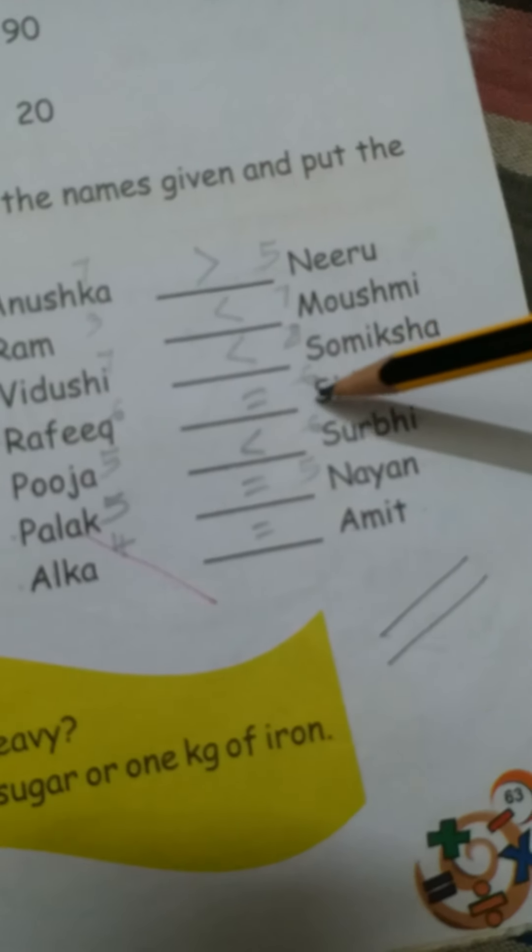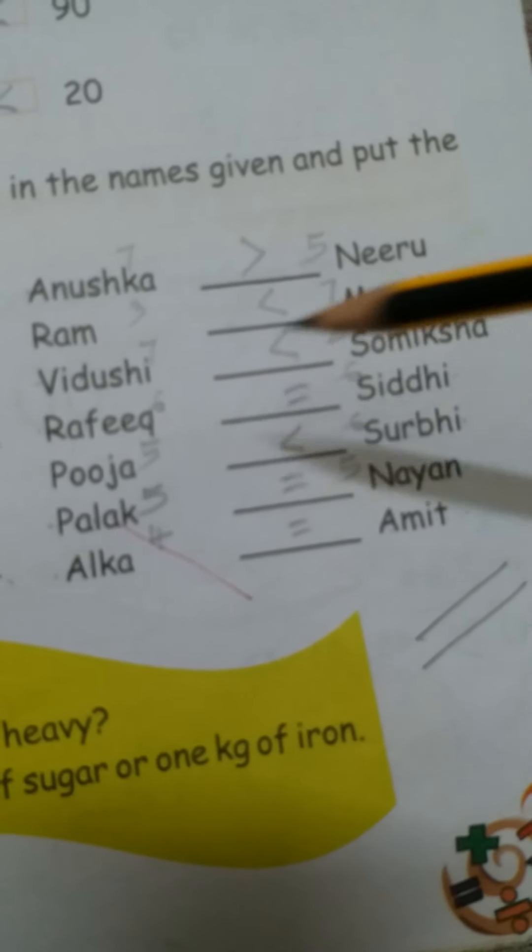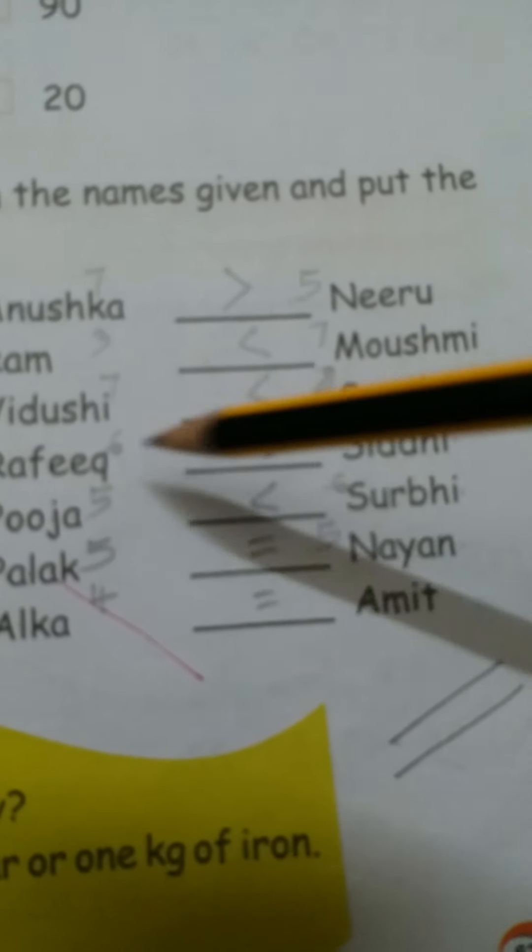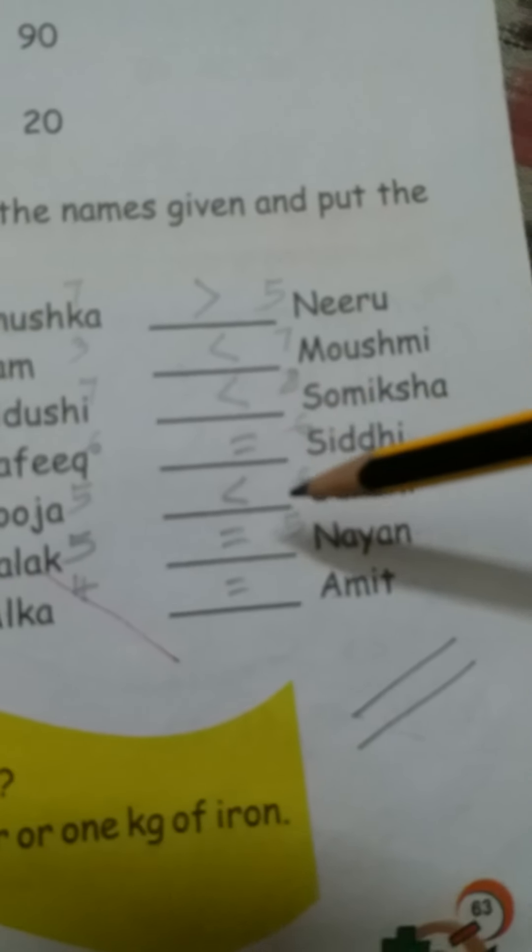And another is 1, 2, 3, 4, 5, 6, so 6 also. 6 here, here also 6. Means 6 and 6, both numbers are same, so that's why we have to draw here equals to sign, understood?